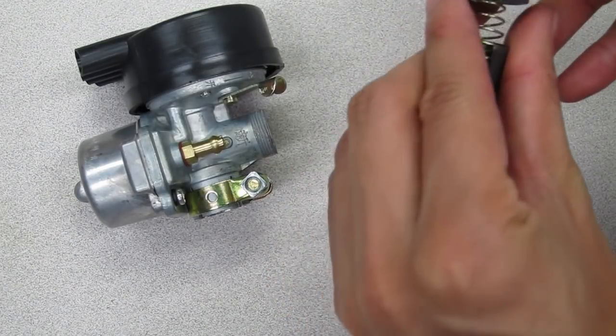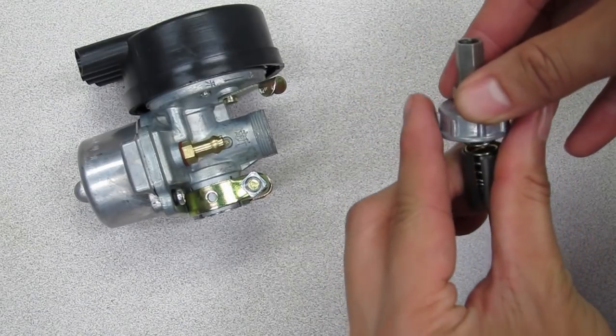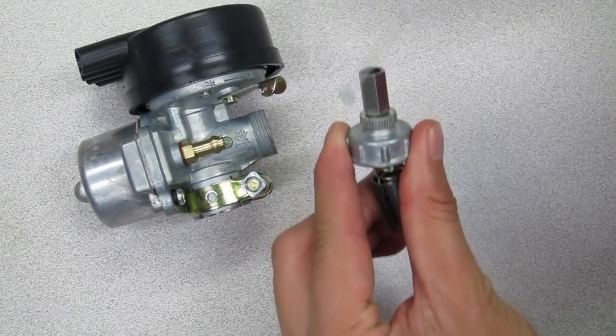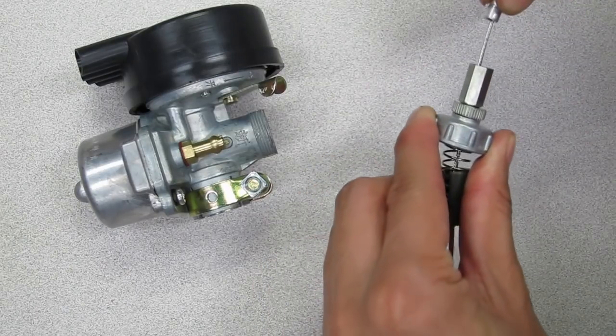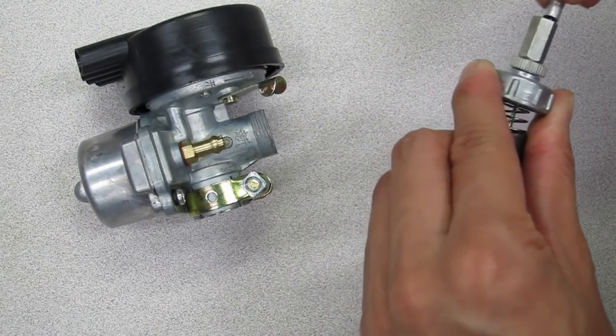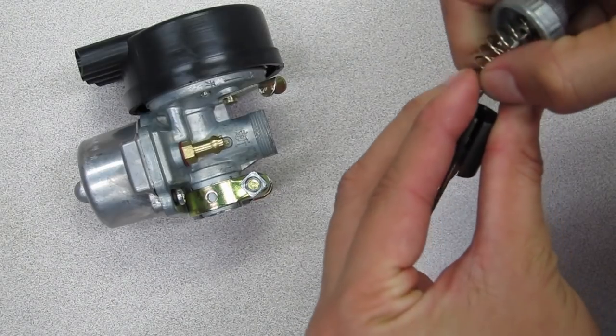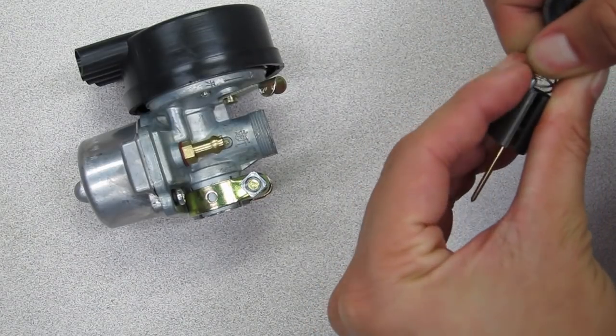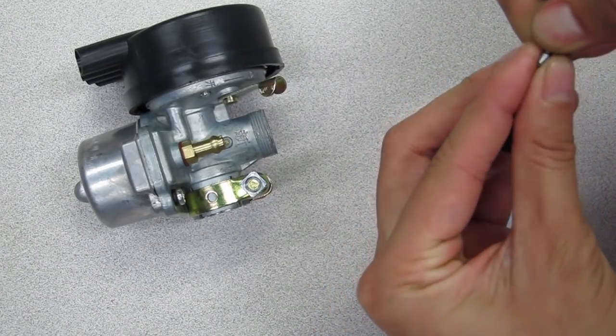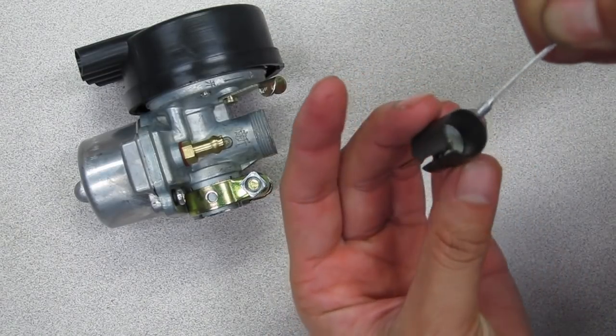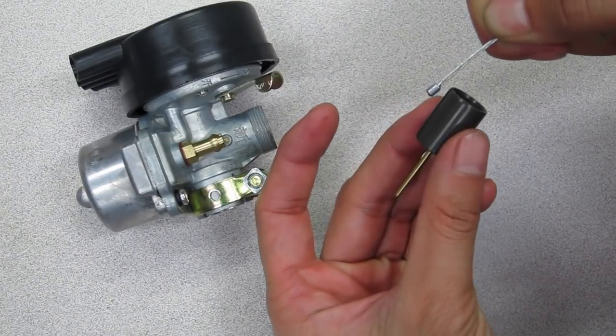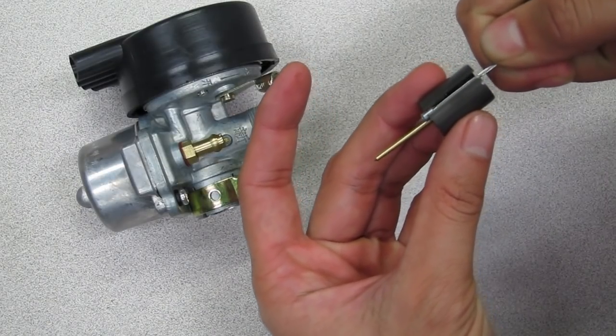Thread the throttle cable through the screw top, then through the spring. Press the spring down into the top to expose the whole wire. Thread it through the slit and pull it through the slot like so.